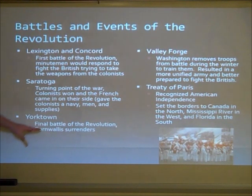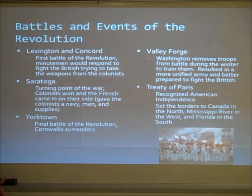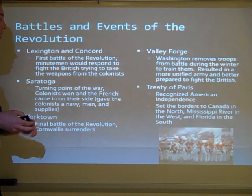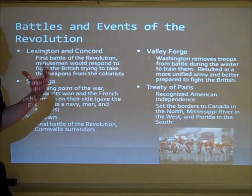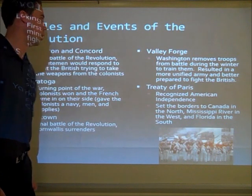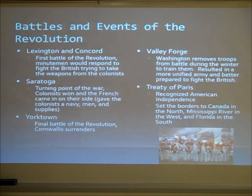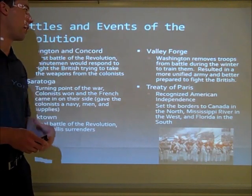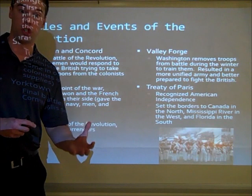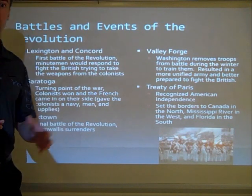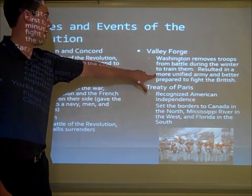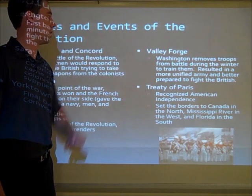The final battle was Yorktown, where Cornwallis, the British general, surrendered — deciding the war was costing too much money, they didn't have enough men, and there was no way they could win. Also important was Valley Forge, not a battle but an event where Washington removed his troops from battle during the winter to train them. The circumstances were very harsh — Valley Forge was very cold, men had no shoes and little supplies, and many died. But those who stayed learned better fighting techniques, resulting in a more unified army better prepared to fight the British.